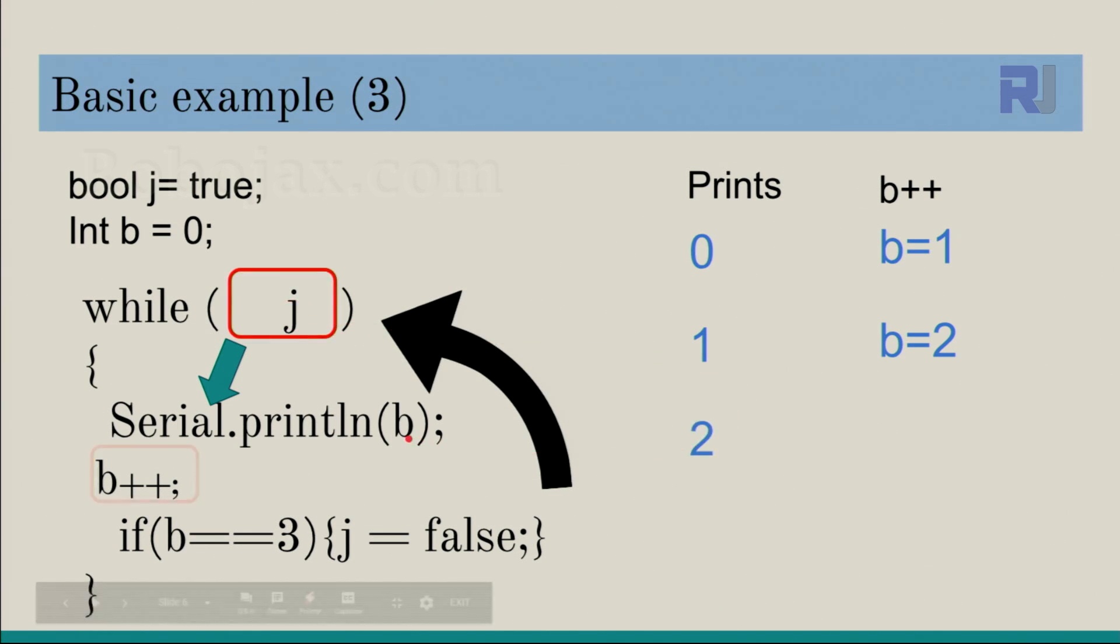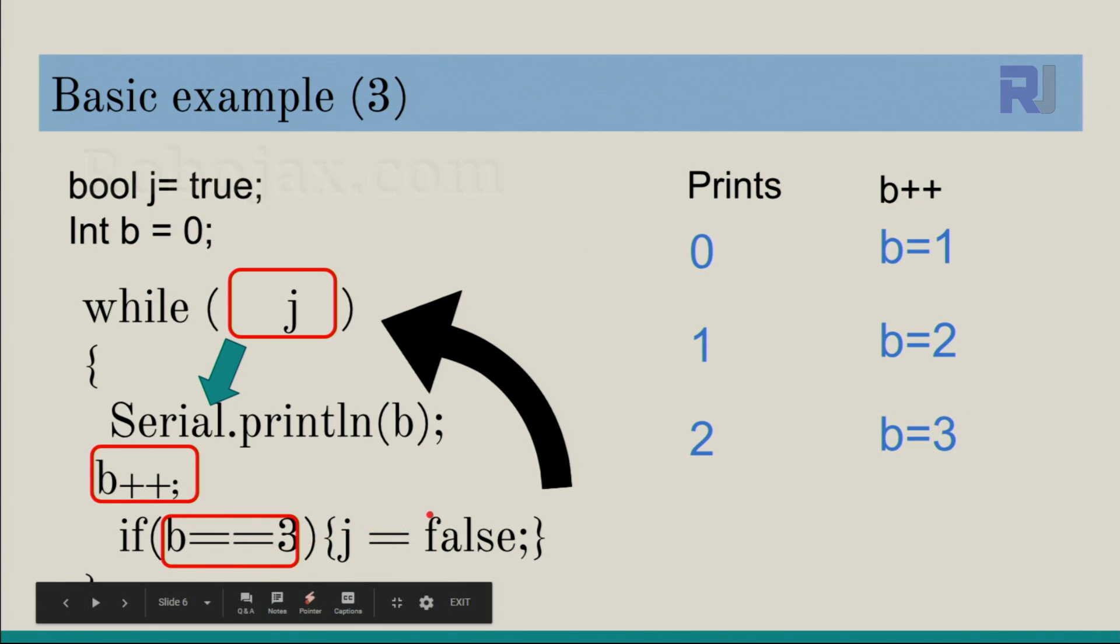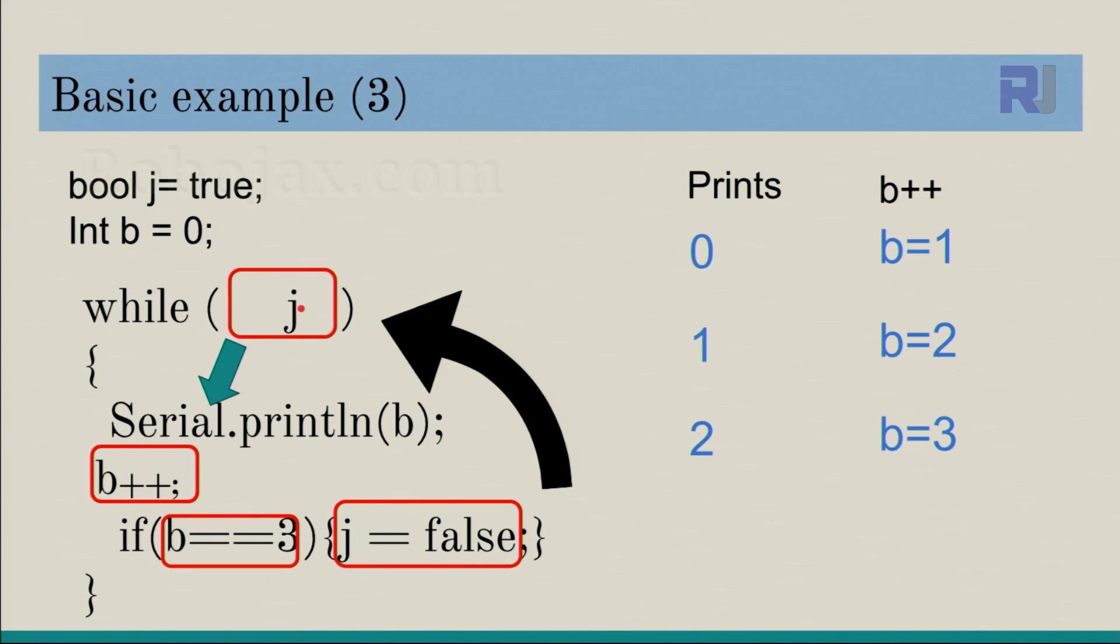Increments, it becomes two. Two is not equal three, this will not be executed. It goes here. J is true, prints two. Increments, b becomes three. Now here we check, b is equal to three, true. Then we will change j to equal false. Now this comes here. J equals false, the code will exit. Nothing will be executed as soon as this is false.